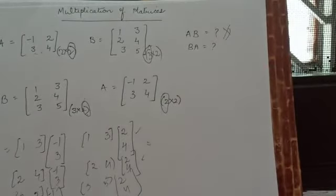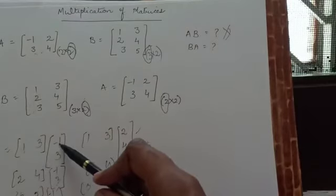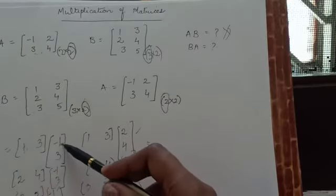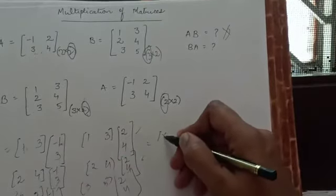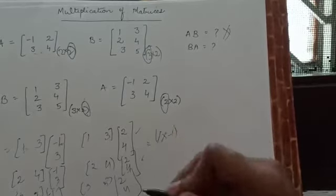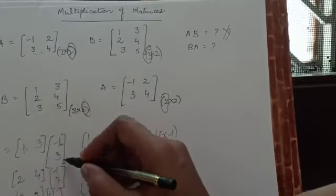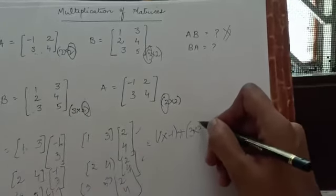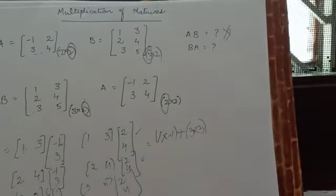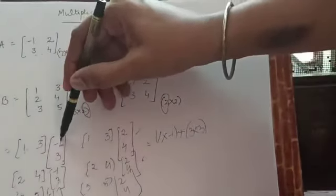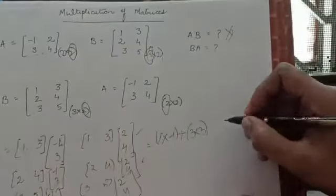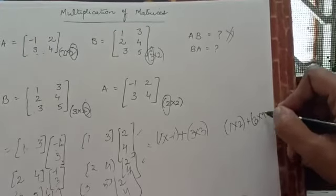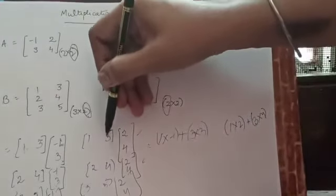For the first element, we write BA: the first element of row 1 is multiplied with the first element of column 1, giving 1 multiplied by minus 1. Then the second elements are multiplied: 3 into 3, with a plus sign in between — so it is 1 times minus 1, plus 3 times 3. For the next element in the first row: 1 into 2, plus 3 into 4.